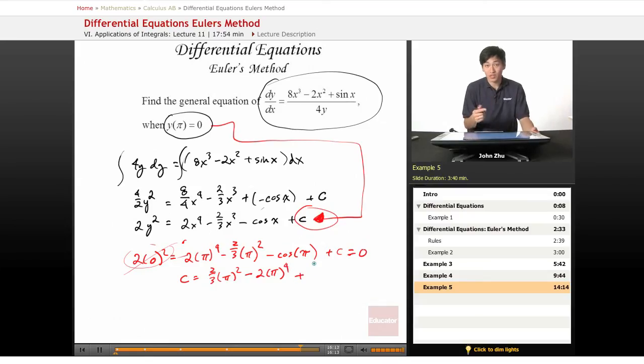Cosine of pi is simply just negative 1. So negative 1 right here.